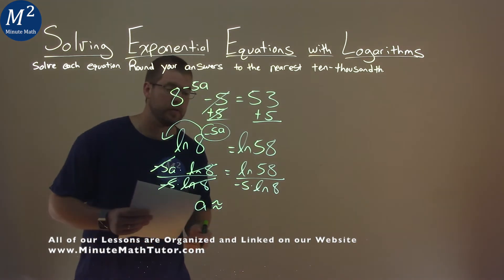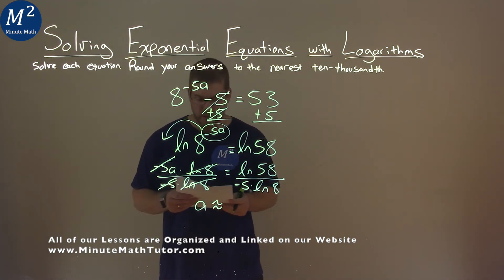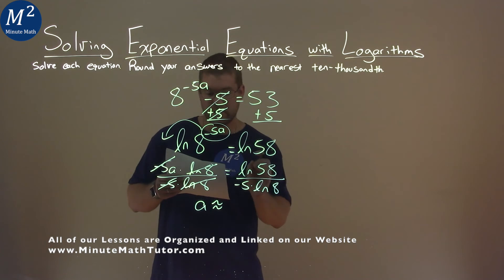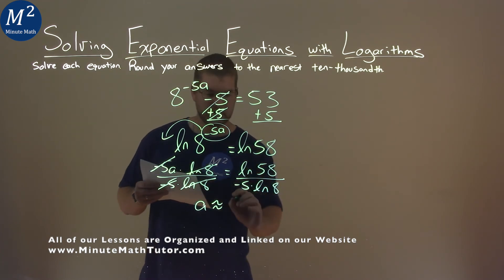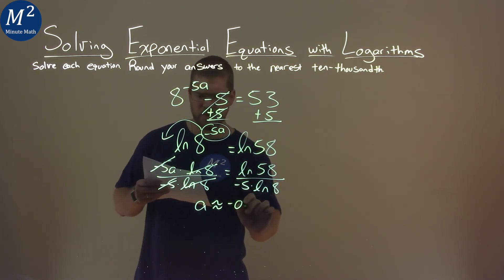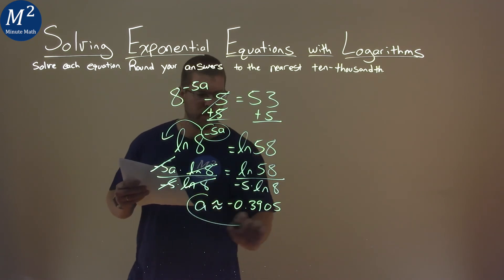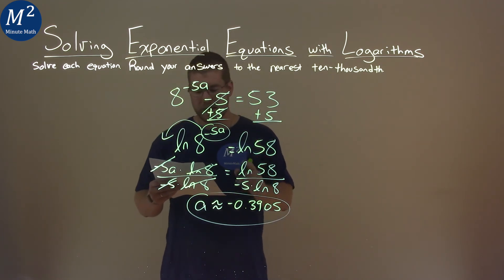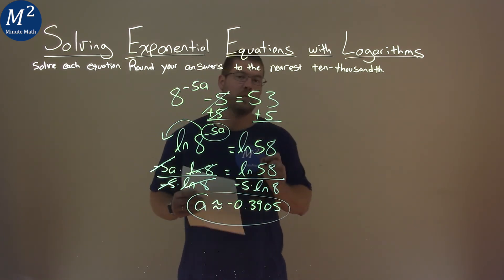That's going to be approximately equal to, and this is where we'll use our calculator, the natural log of 58 divided by negative 5 times natural log of 8 comes out to be approximately negative 0.3905. And so our final answer here is a is approximately equal to negative 0.3905.